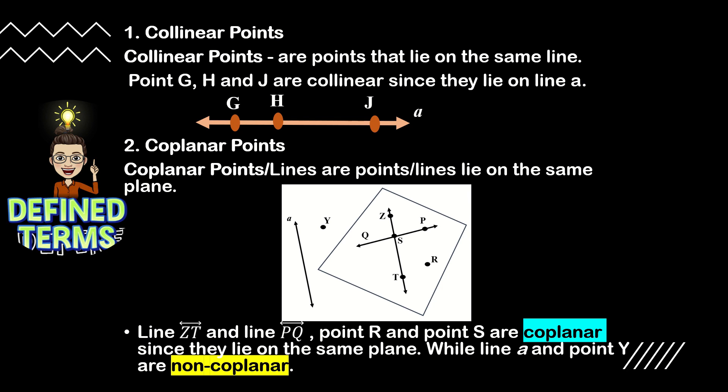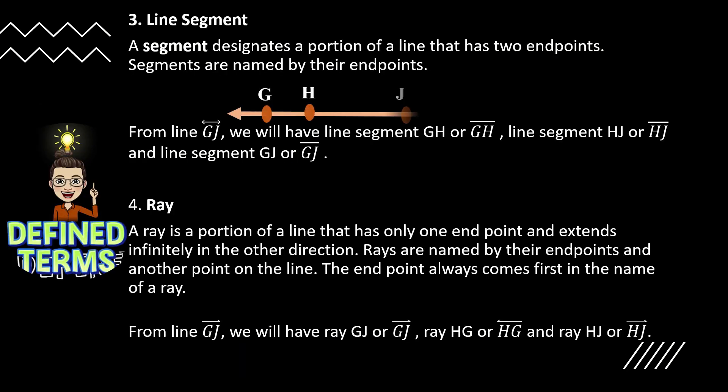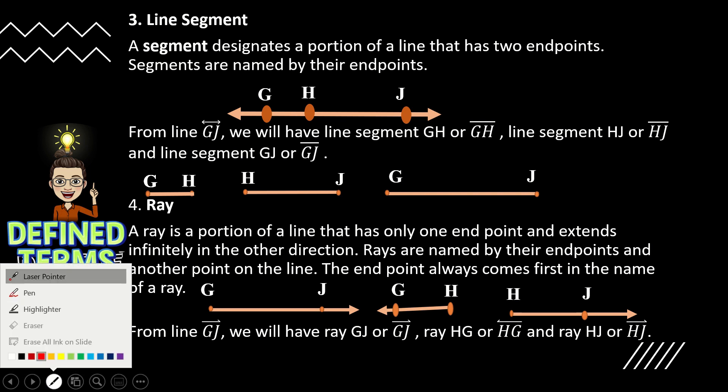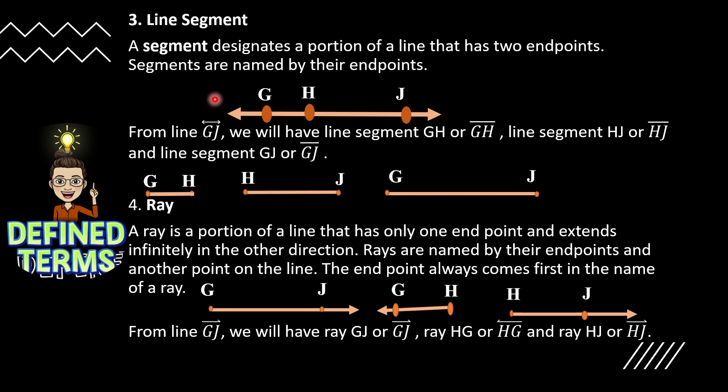For number three, we have the line segment. A segment designates a portion of a line that has two endpoints. Segments are named by their endpoints. From line GJ, we will have line segment GH, line segment HJ, and line segment GJ. The symbol above the name of line GJ has two arrowheads, while the symbol above the names of the segments GH, HJ, and GJ does not have arrowheads, indicating they are line segments.